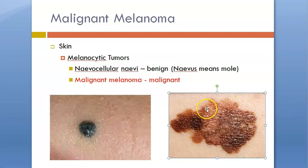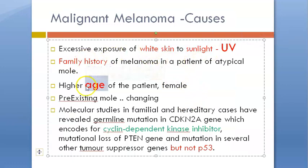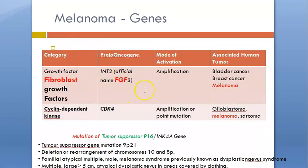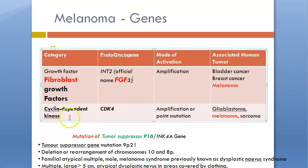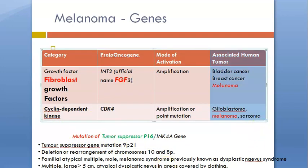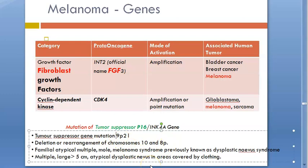You'll have to take early treatment for this. Whenever there is exposure to UV light, higher age of the patient, family history, or genetic mutation — the person more susceptible is a blonde, blue-eyed, bronzed (tanned) person because of UV light. The genes affected include fibroblast growth factor proto-oncogene, cyclin-dependent kinase, and there is mutation of the tumor suppressor. Chromosomes 10, 8, and 9 are also affected.